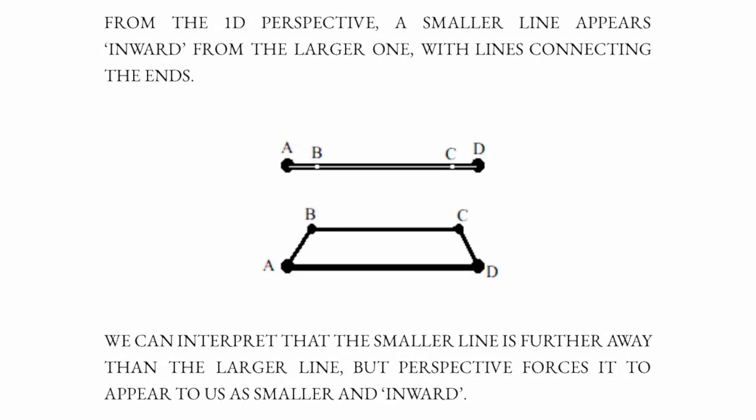From the one dimensional perspective, a smaller line appears inward from the larger one, with lines connecting the ends. We can interpret that the smaller line is further away than the larger line, but perspective forces it to appear to us as smaller and inward.